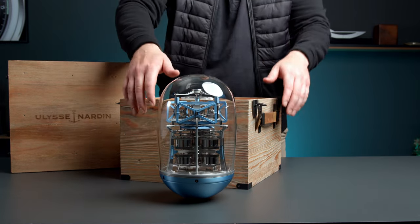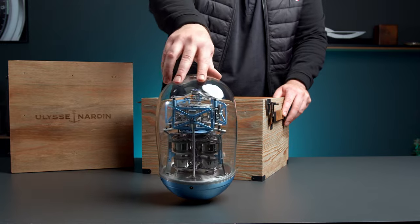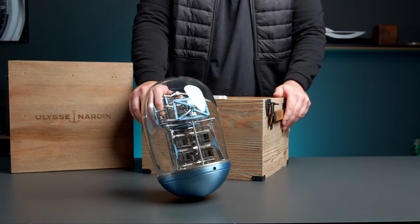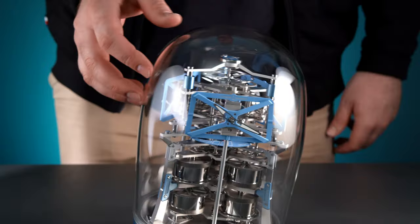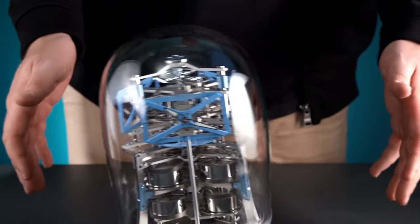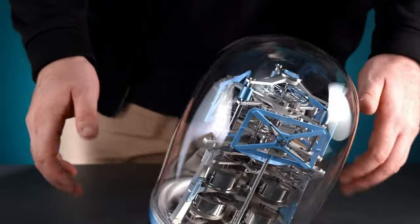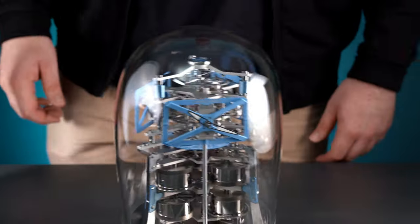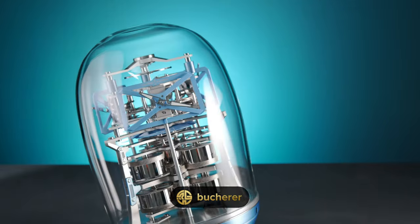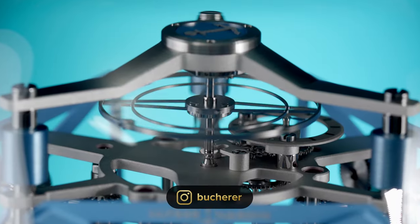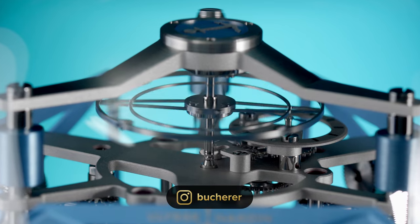This one was created exclusively for Bucherer by Ulysse Nardin and the masters of mechanical clocks, L'Epée. The color of this 30-piece limited edition is ice blue and if you want to buy one, just check the links in the video description below or contact Bucherer directly. They're the only retailer in the west to offer this mesmerizing edition.